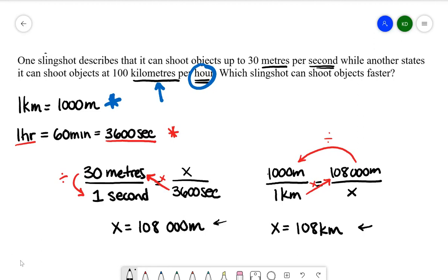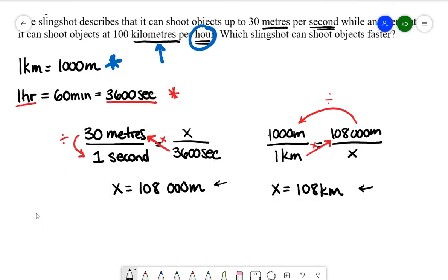So what I now have is that slingshot 1 will shoot at 108 kilometers per hour. And now we're able to compare that with slingshot 2.